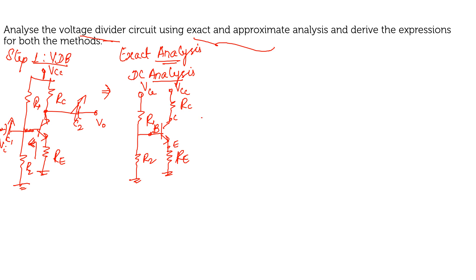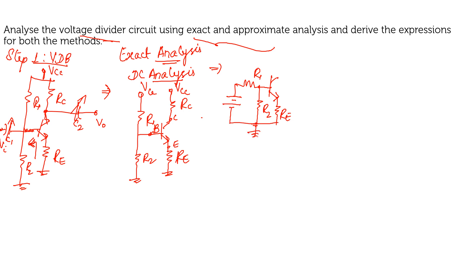I can redraw the circuit with the input side showing RE, R1, R2 across the base, and VCC. Both representations are equivalent. I have redrawn the circuit and now I am going to apply the Thevenin's equivalent circuit towards the input side.